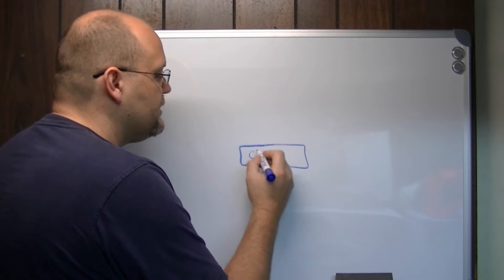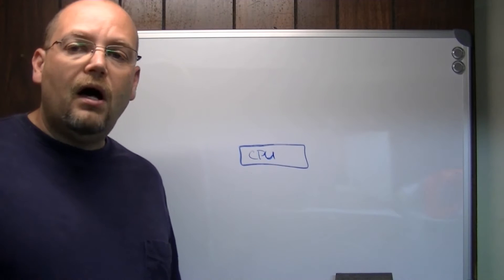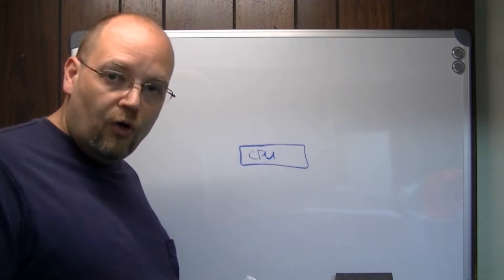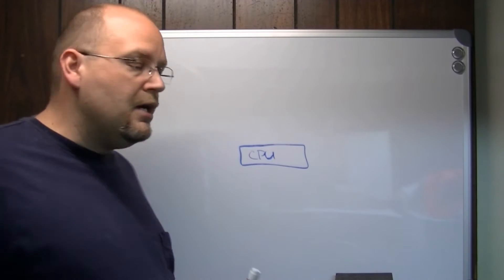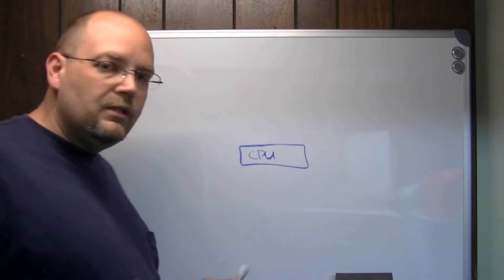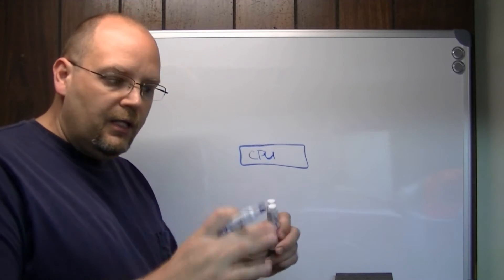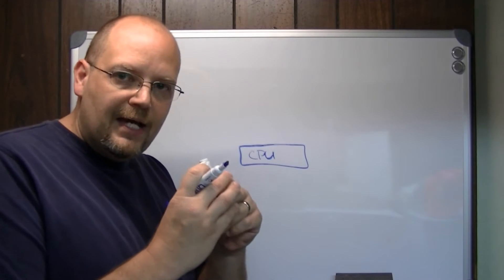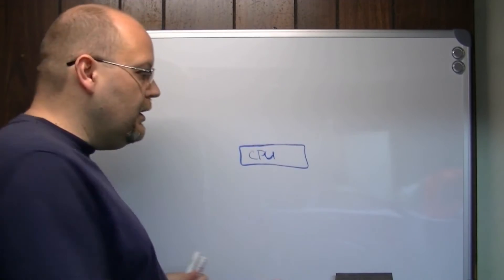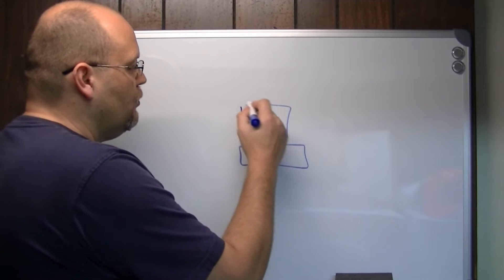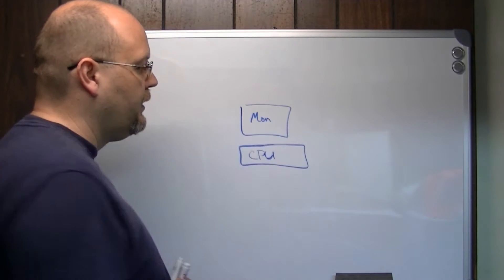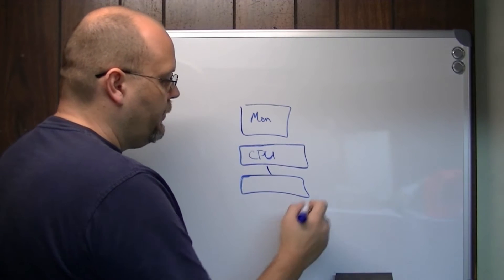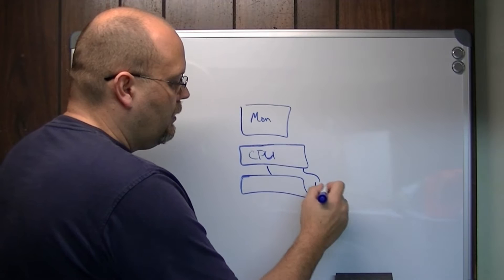And that box contains your processor, the memory, the hard drive. Way back then, we didn't have hard drives, but that box, if it's a desktop computer, typically you have the box. A lot of people call that the hard drive, but the hard drive is actually a little device inside. But this is called the CPU.